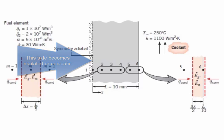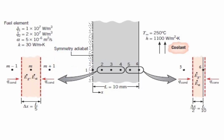We divide this side of the problem into five different elements, giving us six different nodes. Note that we have three different types of nodes: one node exposed to insulation, a second group exposed to convection, and a third group of interior nodes. We are going to derive the equation for each type of node.